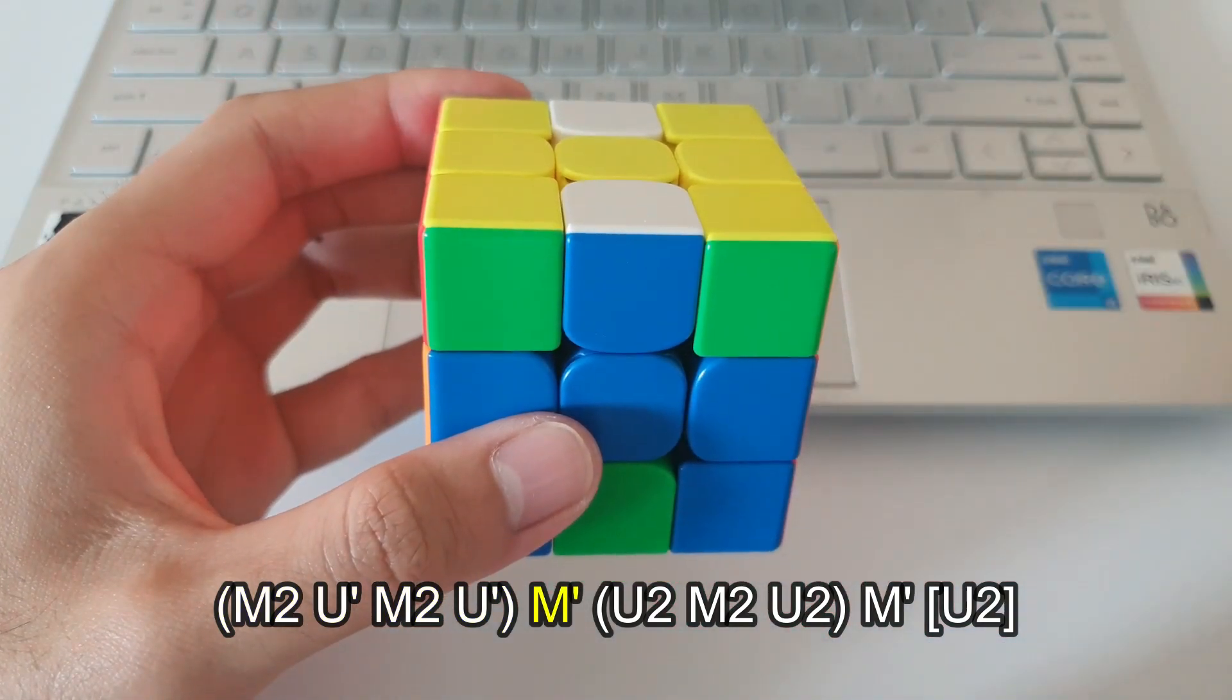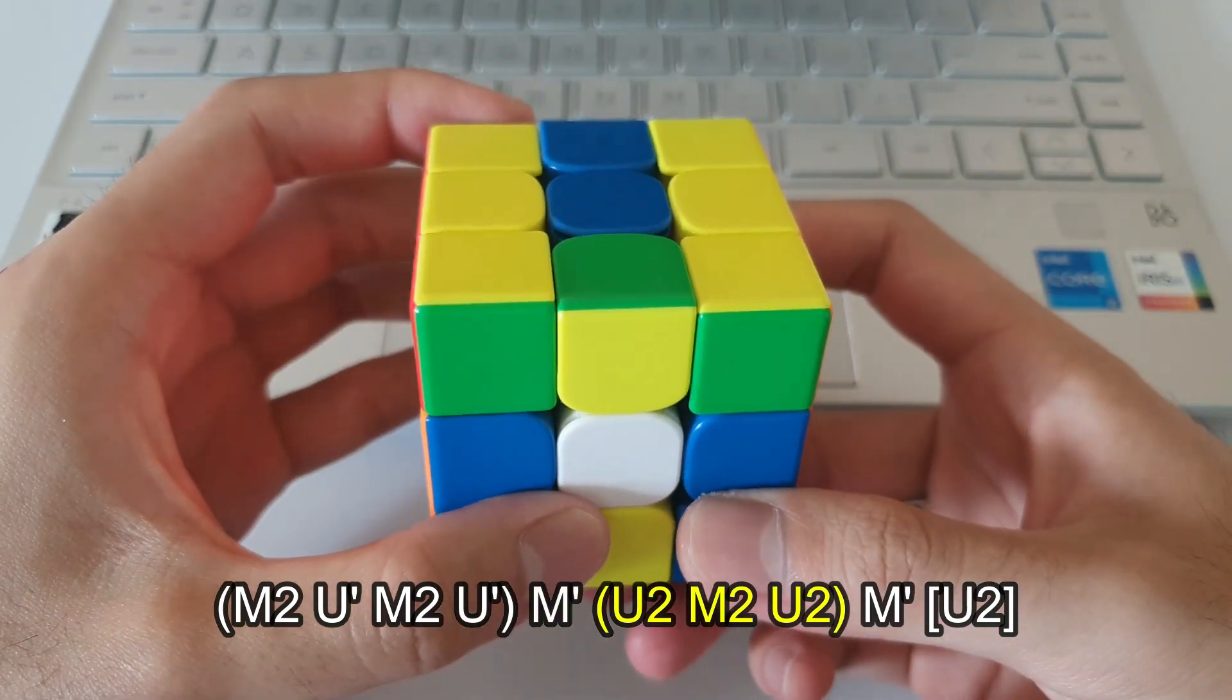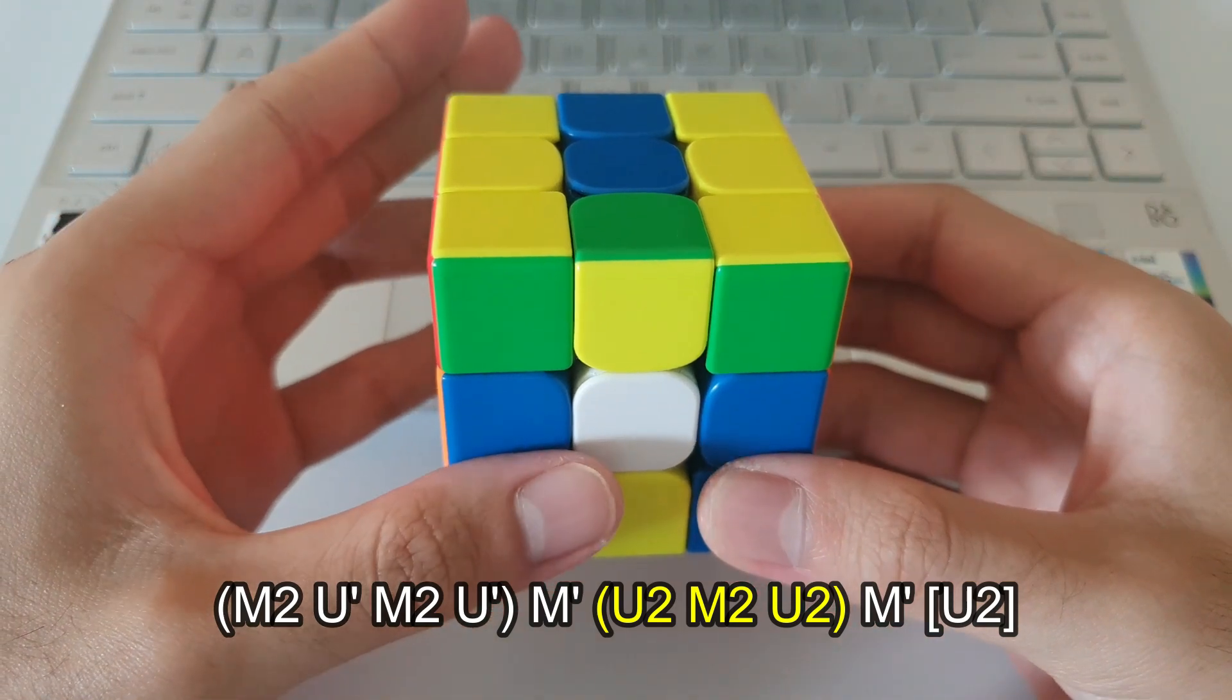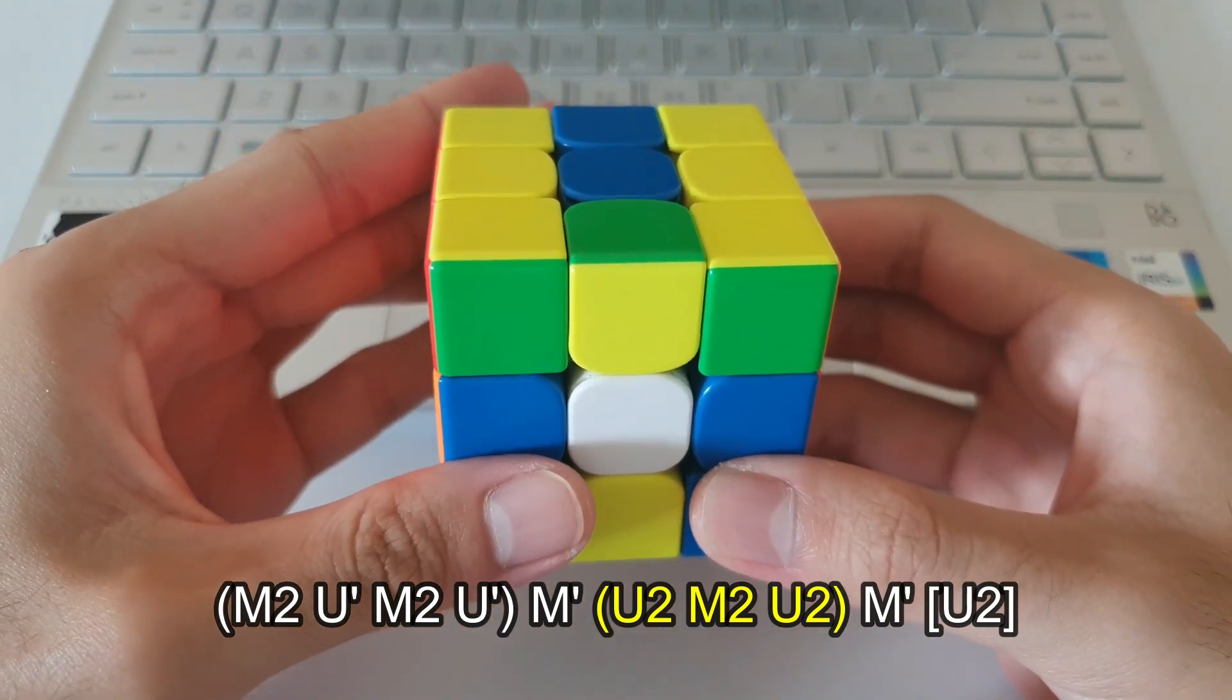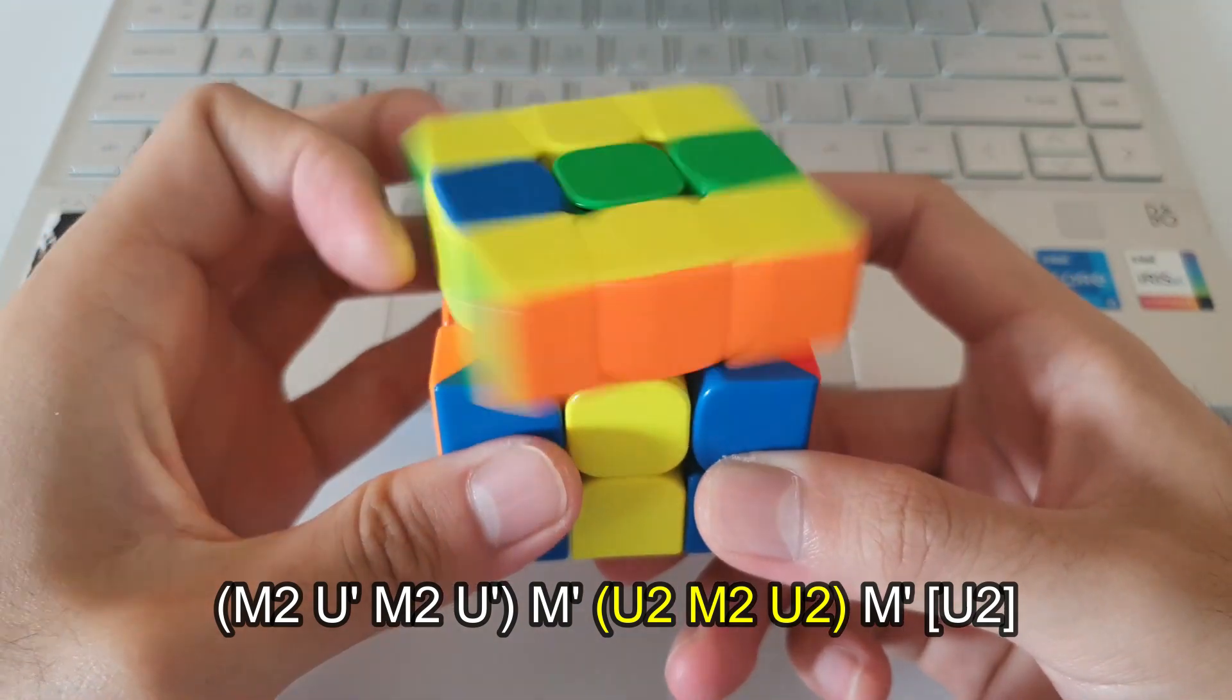After that, you'll have to remember that there's just a single M prime following that. And then this next part should be pretty straightforward as well. It's U2 M2 then U2. So U2 M2 then another U2.